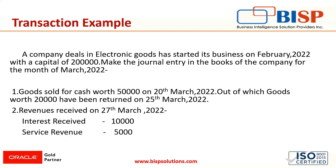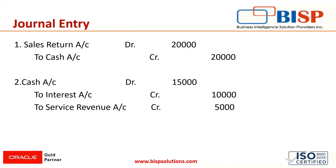So we have to pass a journal entry for the sales return transaction where goods worth 20,000 are being returned to the business. The other transaction is revenue received — the opposite of expenses covered in our previous session. On 27th March 2022, two revenues have been received: interest received for 10,000 and service revenue for 5,000. These are the two transactions we will cover in today's session.